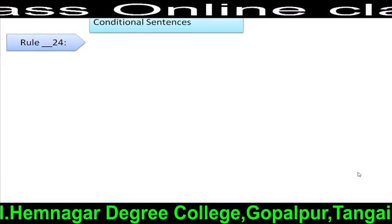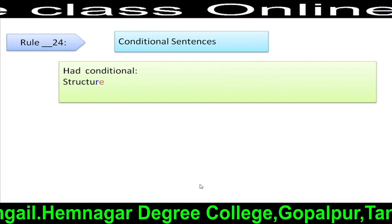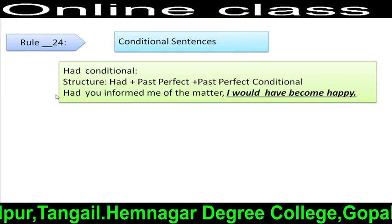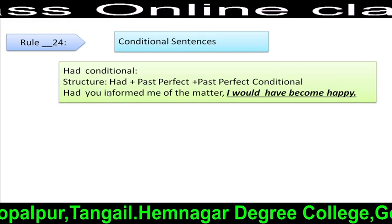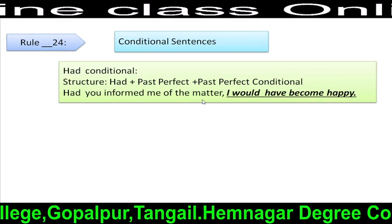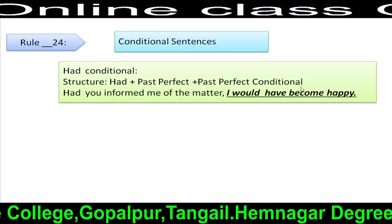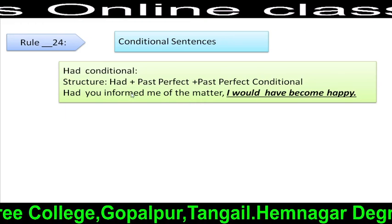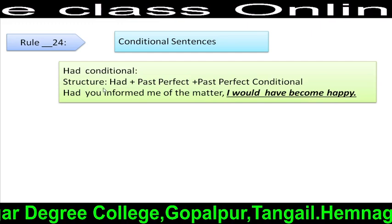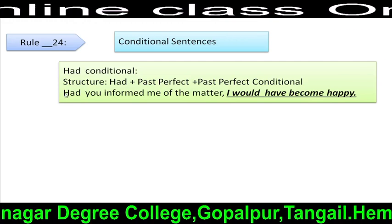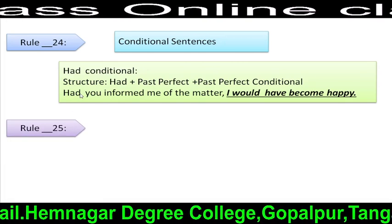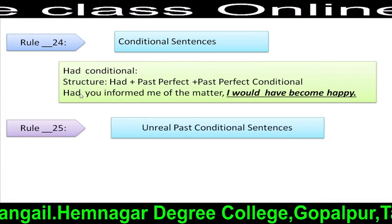Rule 24: Alternative of third conditional using 'Had'. Structure: Had + subject + V3 + extension + past perfect conditional. For example: 'Had you informed me of the matter, I would have become happy.' Here, we can see 'had' replacing 'if' at the beginning of the sentence.